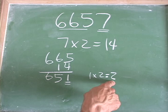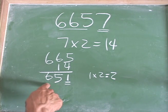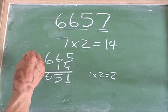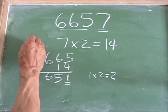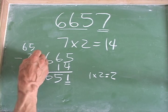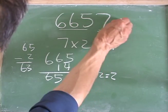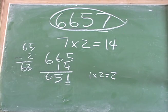Then you subtract 2 from the other two digits, which in this case is 65. So we say, okay, 65 minus 2, and we get 63. And of course 63 is divisible by 7. So that means this whole number here, 6657, is also divisible by 7.